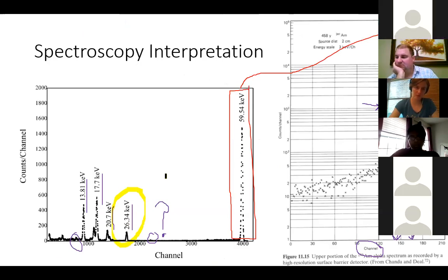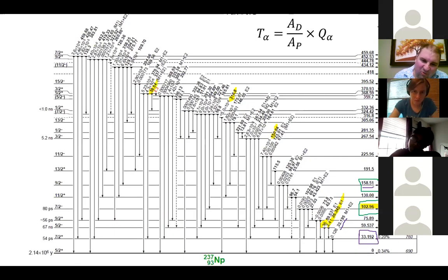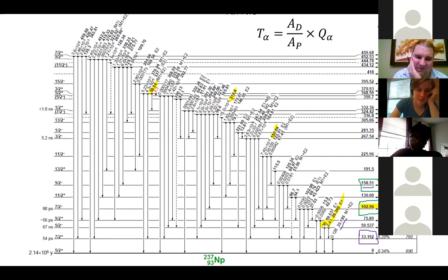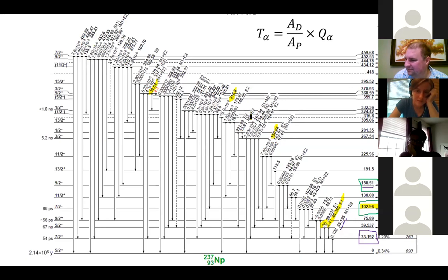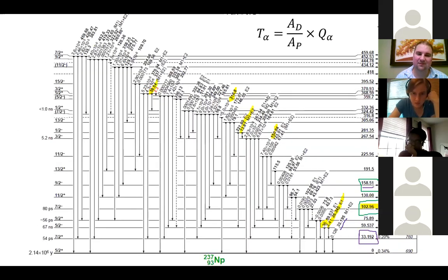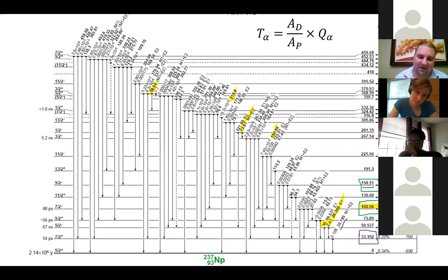A student identifies a 13.81 keV transition energy in the bold numbers halfway down the chart. The instructor confirms it's there, noting interestingly that no relative intensity is given for it — yet it does appear in the gamma spectrum. So at least that one looks like it's coming from the actual decay.